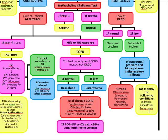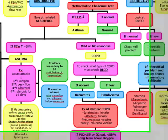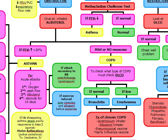We don't want to give steroids in patients with silicosis, asbestosis, and byssinosis due to long-term complications and lack of proven effectiveness. Remember: steroids are only given in sarcoidosis, idiopathic pulmonary fibrosis, and berylliosis.